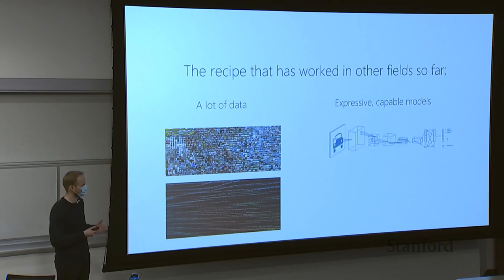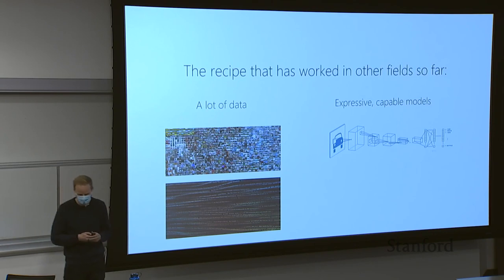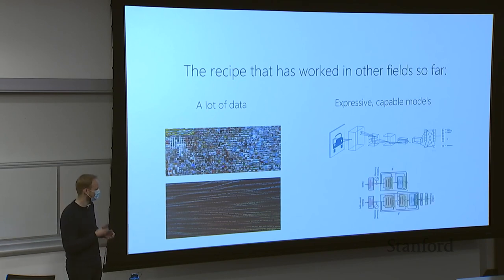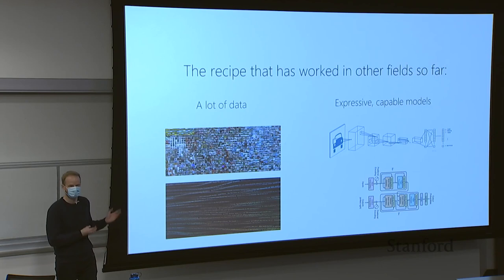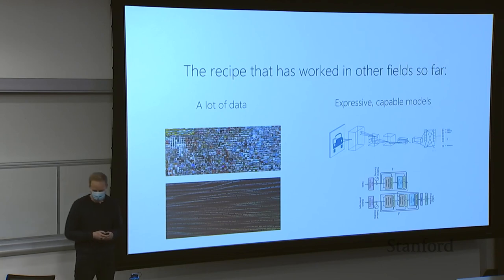For computer vision, traditionally these have been convolutional neural nets. For natural language processing, transformers are now being used, also on vision and many other applications.